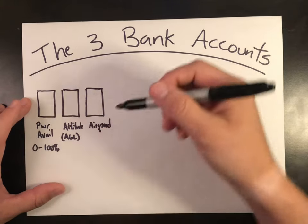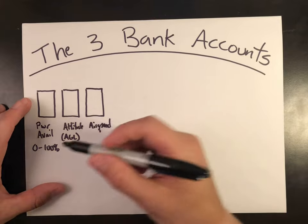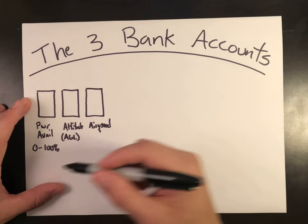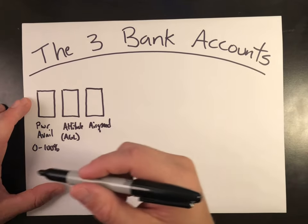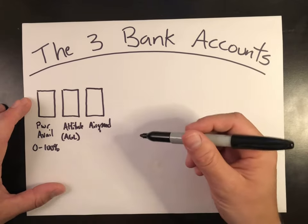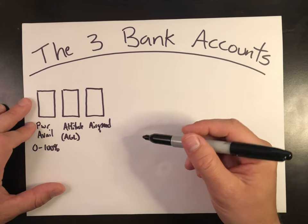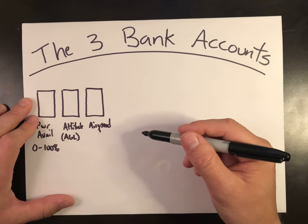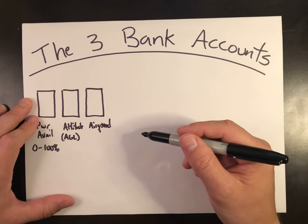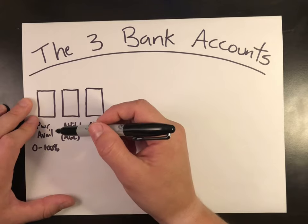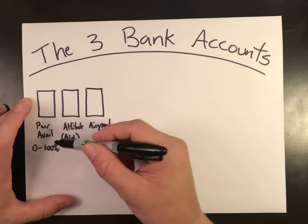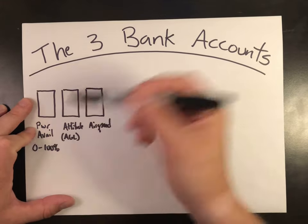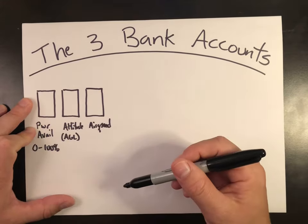Pilots can build these accounts, trade energy between them, or simply give up what's already in them. For instance, when I'm on the ground starting from zero airspeed and zero altitude, I should have high power available — meaning I haven't applied any power yet, so the available power is all the way up to 100 percent.